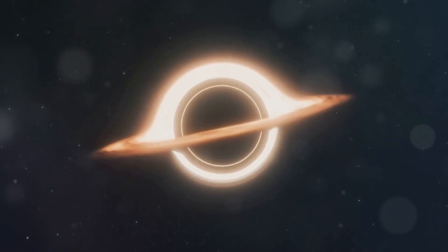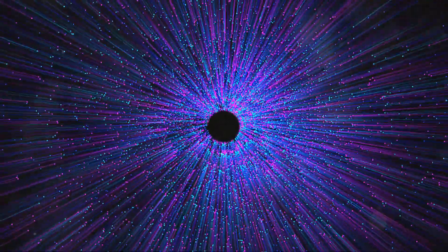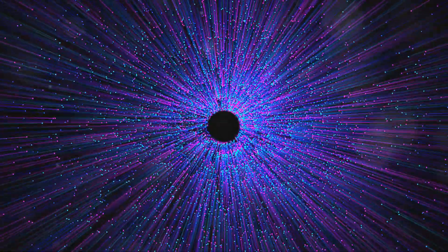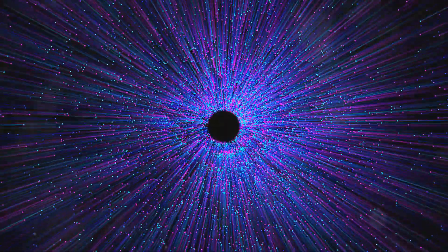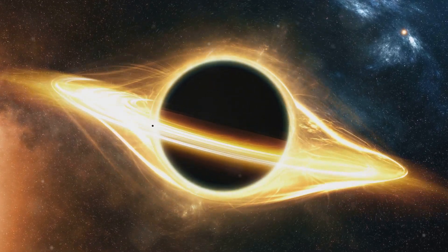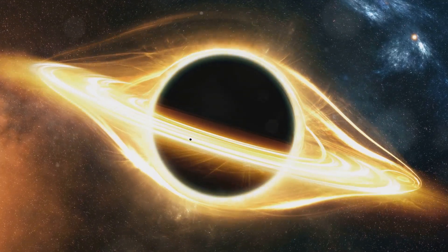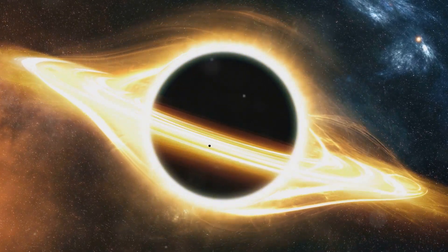Black holes are formed when massive stars collapse at the end of their lives. This collapse causes the star's core to compress into an incredibly dense point. They're incredibly dense, meaning they pack a lot of matter into a tiny space. Imagine squeezing a star several times the mass of our sun into a space no larger than a city. Even though we can't see black holes directly, we know they exist because of how they affect the objects around them. Their immense gravity influences the orbits of stars and gas clouds, revealing their presence.